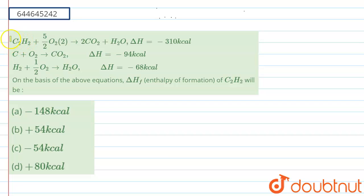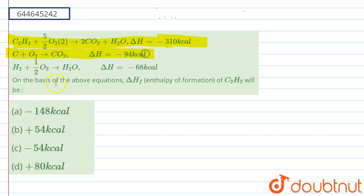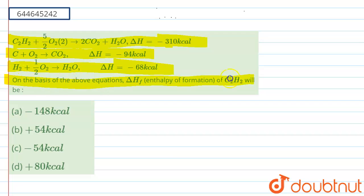In this question, three reactions are given. The first is C₂S₂ plus 5/2 O₂ gives 2CO₂ plus S₂, with a ΔH of minus 300 kilocalorie. The second equation is C plus O₂ gives CO₂ with a ΔH of minus 94 kilocalorie. The third equation is S₂ plus half O₂ gives SO₂ with a ΔH of minus 68 kilocalorie.